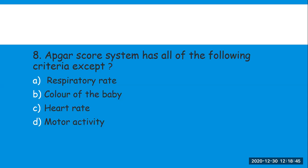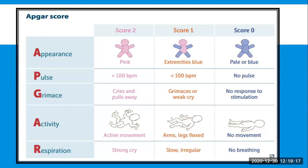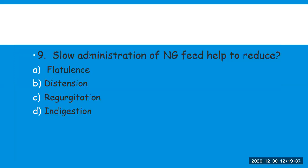Next question: the Apgar score system has all of the following criteria EXCEPT — please read carefully, 'except' means which one is NOT used. Options are: A) respiratory rate, B) color of the baby, C) heart rate, D) motor activity. The right answer is respiratory rate — it is not part of the Apgar score. The Apgar acronym stands for: A = Appearance, P = Pulse, G = Grimace, A = Activity, R = Respiration. This is a very important topic in pediatrics.